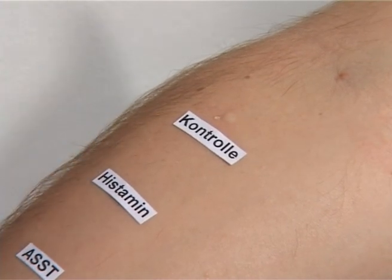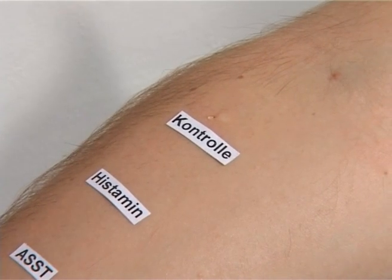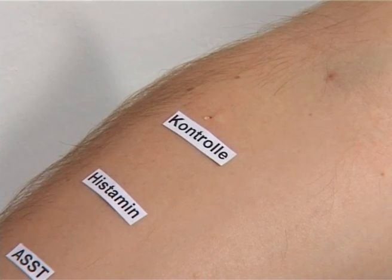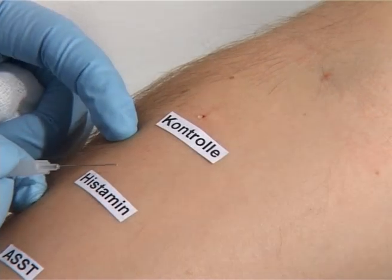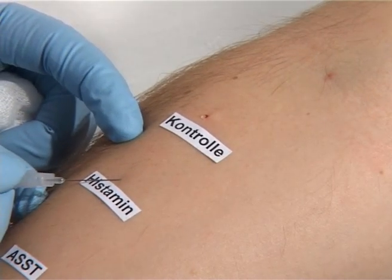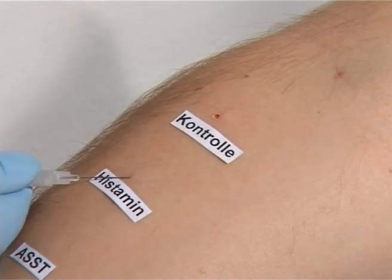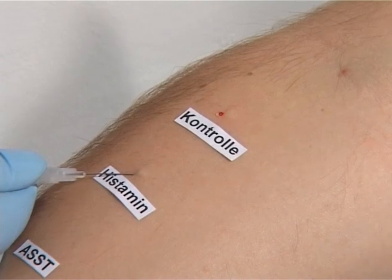Analogous to the usual intercutaneous testing procedure, the testing occurs on the volar lower arm after a disinfectant has been sprayed on. The three testing areas are labeled before the injections. The three test areas should be at least 4 cm apart.